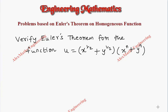Hi students, this is Alex. In this video we are going to discuss a problem based on Euler's theorem on homogeneous functions. Here we have to verify Euler's theorem for the given function u = (x^(1/2) + y^(1/2))(x^n + y^n). Let's rewrite this as u(x, y) since the function is in terms of x and y.